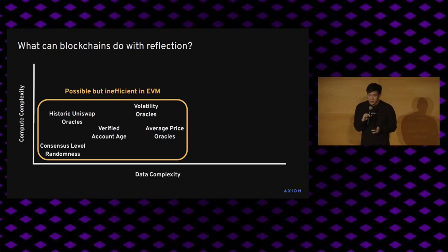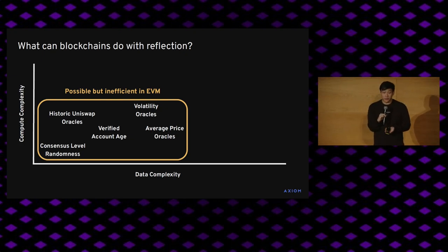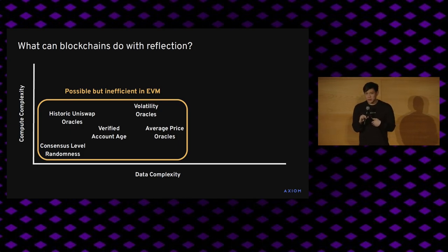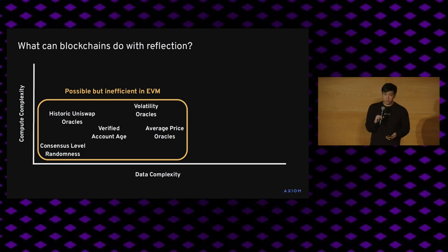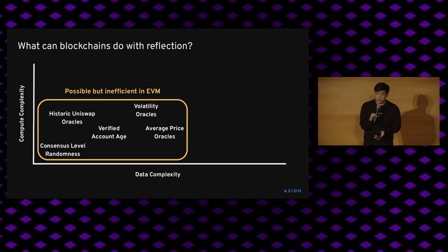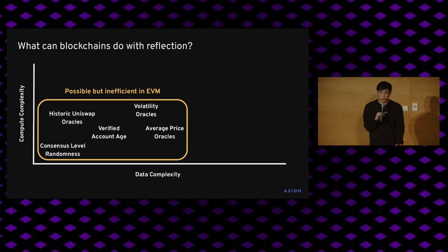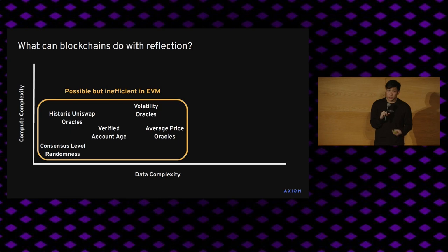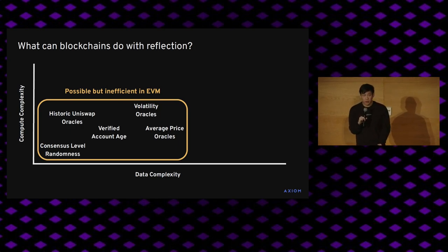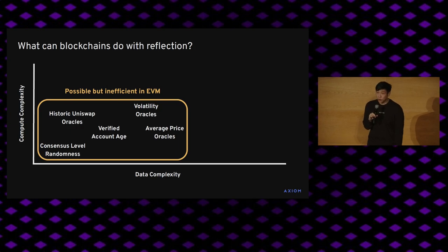What can we actually do with this? We think of this in stages. I've drawn a rough plot with amount of data read on the horizontal axis and amount of compute required on the vertical axis. The first class of applications are things generally possible in the EVM today, whether by doing single storage proofs directly or by adding caching to your application. This would include things like reading historic consensus-level randomness from the block header, verifying your account age, or reading a historic Uniswap spot price or TWAP price.